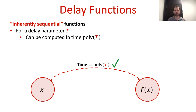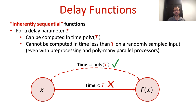For a delay parameter t, the function should be computable in time polynomial in t, so for example 4t or t cubed. However, it should not be possible to evaluate the function on a randomly chosen input in time which is strictly less than t. This last requirement should hold even if we allow for a pre-processing stage and for attackers with a polynomial number of parallel processors.